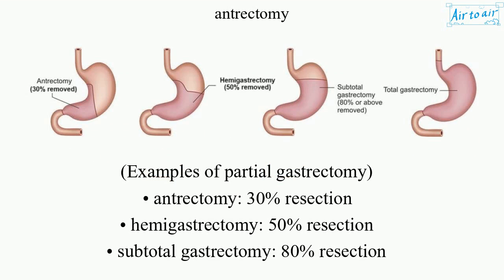Examples of partial gastrectomy: antrectomy — 30% resection; hemigastrectomy — 50% resection; subtotal gastrectomy — 80% resection.